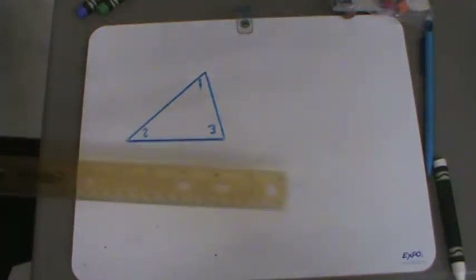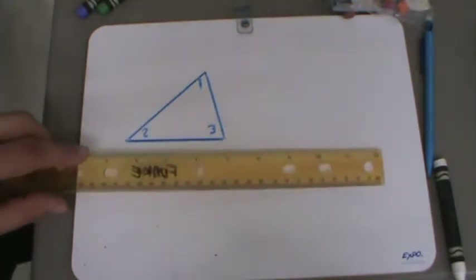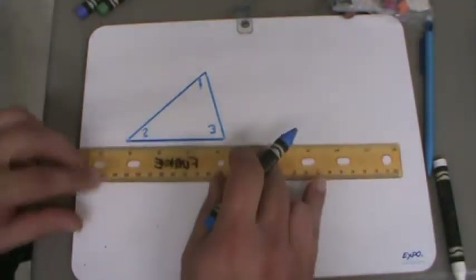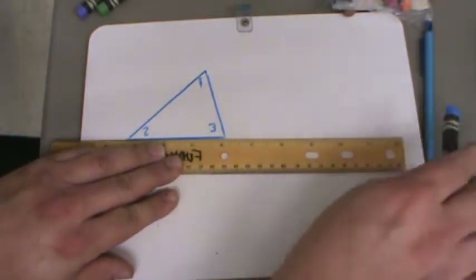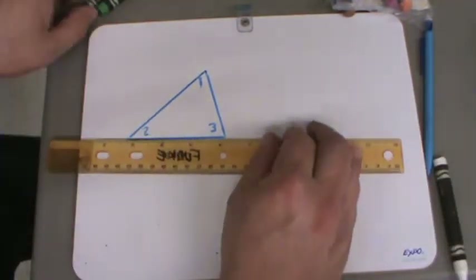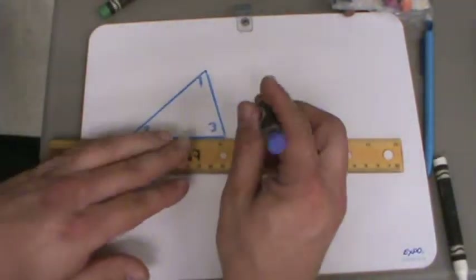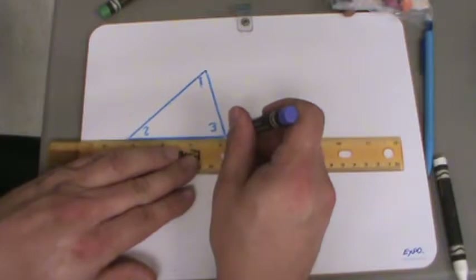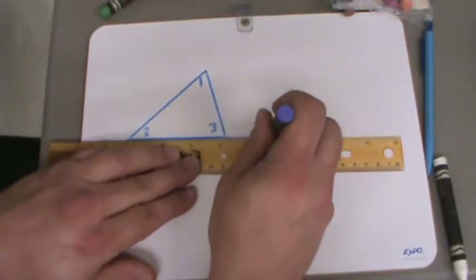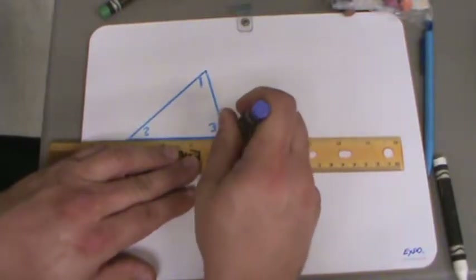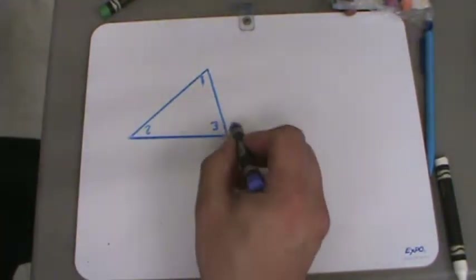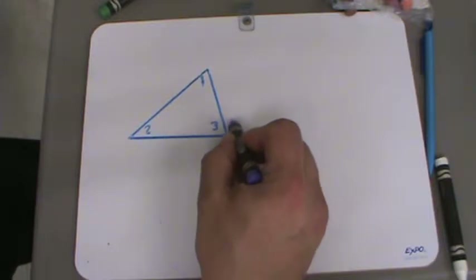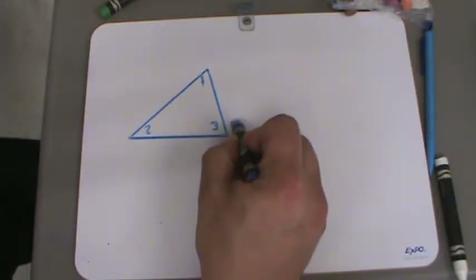Now if I were to take this base and extend it out with a different color, extend it out like this, you'll see that I have another angle out here, and we're going to call that angle 4.